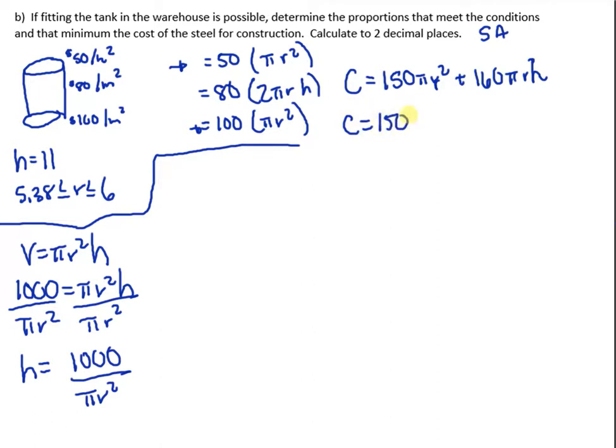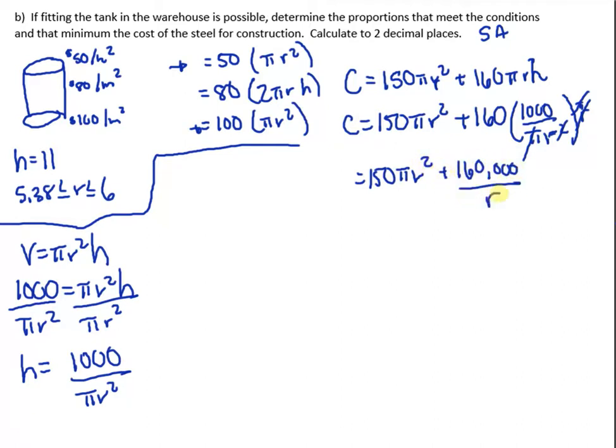So we have 150 pi r squared plus 160 times 1000 over pi r squared times r. The pi's cancel out, the squared and the r cancel out. What are we left with? 150 pi r squared plus 160,000 over r. This is the cost. This is the formula for the cost, depending on the radius.